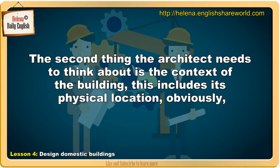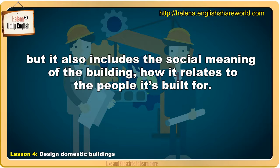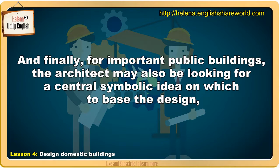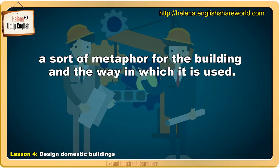The second thing the architect needs to think about is the context of the building. This includes its physical location, obviously, but it also includes the social meaning of the building — how it relates to the people it's built for. And finally, for important public buildings, the architect may also be looking for a central symbolic idea on which to base the design, a sort of metaphor for the building and the way in which it is used.